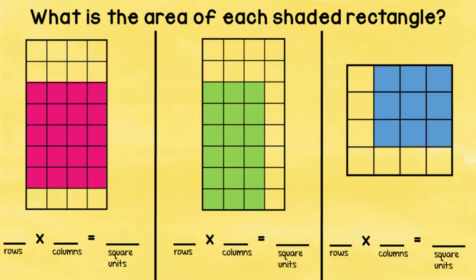So you could get the area either way. Now, let's use that same concept and apply it to these three rectangles. Let's take a look at this bright pink one. And you can see that going down, there are five rows, and the columns going across, there are four of them. So we have the multiplication fact, five times four. And what is five times four? If you know it, go ahead and say it out loud. Five times four equals, you're right, 20 square units.